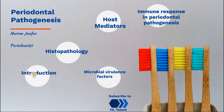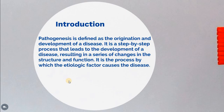This is a long lecture. I'll try to make it partitioned to be more understandable and easy. Starting from the introduction: pathogenesis is defined as the origination and development of disease. It's a step-by-step process that leads to the development of a disease, resulting in a series of changes in structure and function. It's the process by which etiological factors cause the disease.